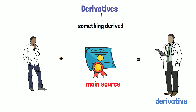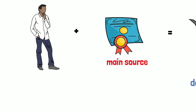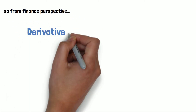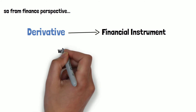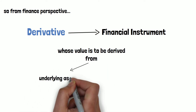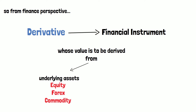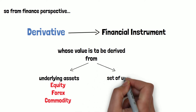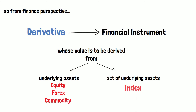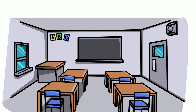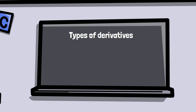From a finance perspective, a derivative is a financial product or financial instrument whose value is derived from the value of an underlying asset such as equity, forex, or commodity, or the value of a set of underlying assets like an index. There are four basic types of derivative contracts: forward contract, futures contract, options, and swaps.